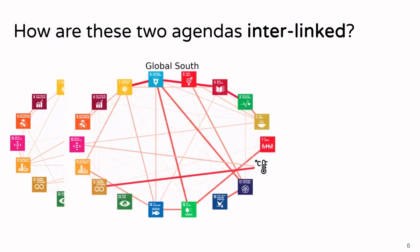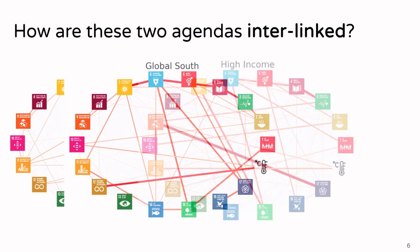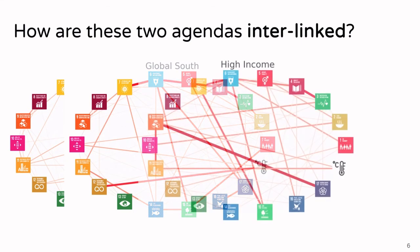In other regions — here in the global south — we see slightly different dependencies. What stands out especially is the strong connection between SDG 12 (responsible consumption and production) and climate change. But as before, clean water and sanitation has many different strong connections.